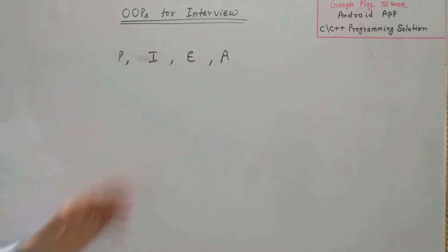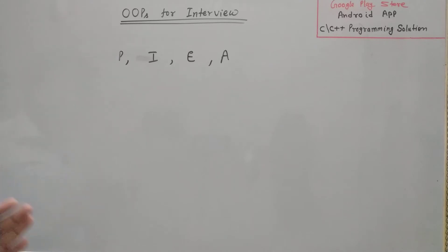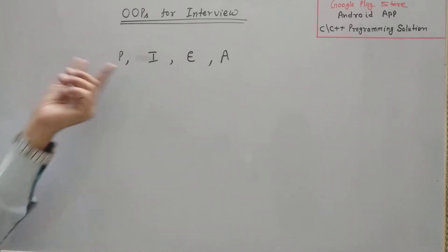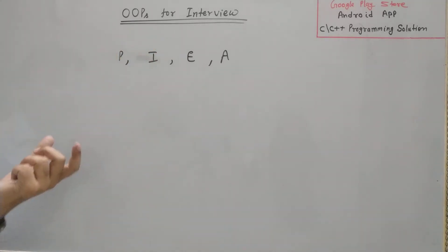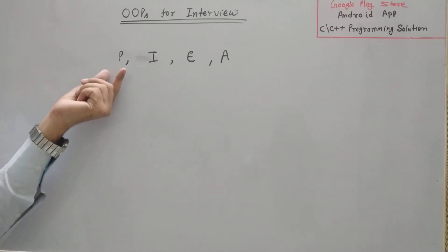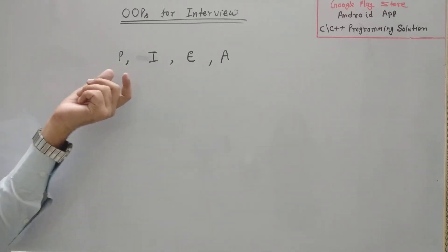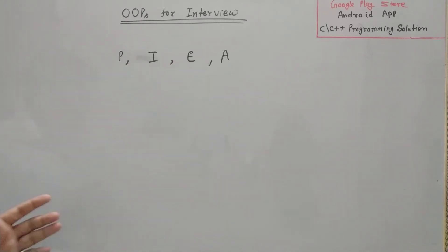I will cover each of them one by one in upcoming videos, but this is the introductory video where I am going to give you the overview of object-oriented programming. There are four main properties — it also has some extra properties we will discuss in later videos — but when they ask you to tell them something about OOP or object-oriented programming, you should mention these four compulsorily. If you explain all of these with their definitions, it will be good for you.